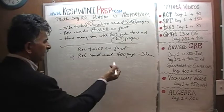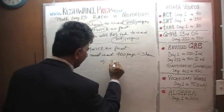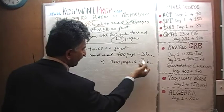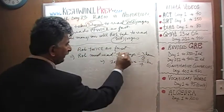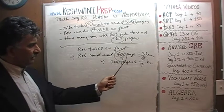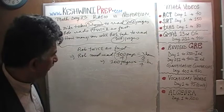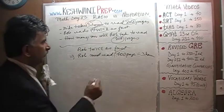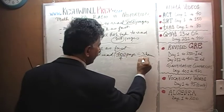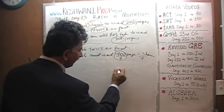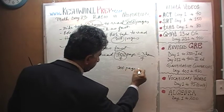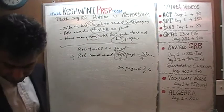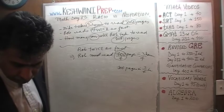Bob reads 400 pages in 3 hours. He needs to read 100 pages, so divide both sides by four: 400 divided by 4 is 100 pages, and 3 hours divided by 4 is three quarters of an hour. So Bob reads 100 pages in three quarters of an hour. The question asks how many minutes — three quarters of an hour is 45 minutes.